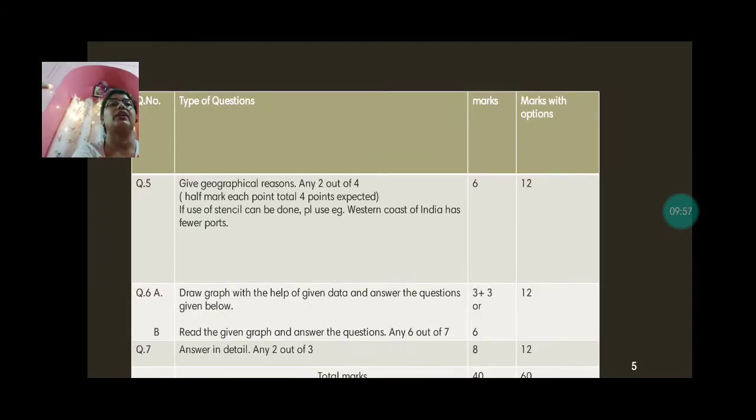The next question 5 is give geographical reasons. There are 4 options. You have to do any 2, 3 marks each. So you have 6 marks for 2 questions. Suppose if you can write 4 points. The board normally expects 4 points. Half mark each. Suppose if a particular one does not have 4 points at all and you cannot break it into any more points. Then the board will expect 2 marks. But try and choose questions, give reasons where you can get 4 points. So 4 points for total 3 marks. Then half mark each. 4 points are expected. There can be 6 marks. 3 marks are there. So 6 points can be there. Mostly we do not have 6 points. Then 4 points at least are expected.